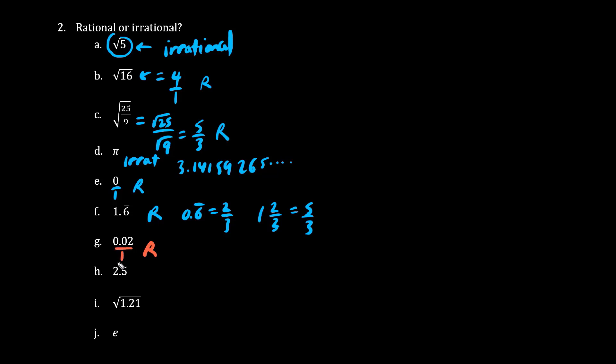Another rational number we have here is 0.02, or 0.02 over 1. Multiplying top and bottom by 100, we move the decimal place to the right, so we have 2 over 100, which is integer over integer. 2.5 is also rational. We have 2.5 over 1, multiplying top and bottom by 10, we have 25 over 10.